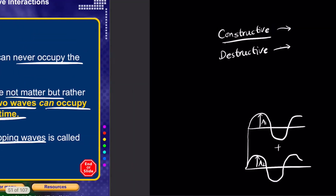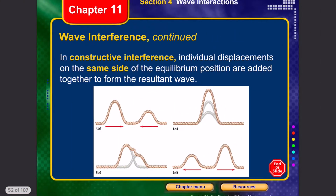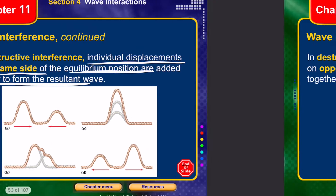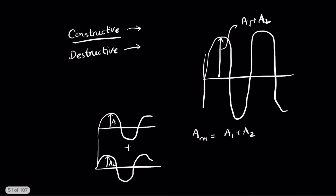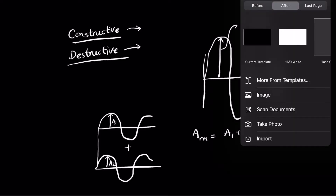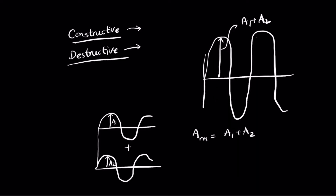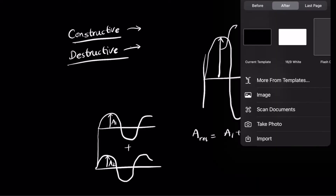In constructive interference, individual displacements on the same side of the equilibrium position add together to form the resultant wave. The second type is destructive interference, which happens when you have two waves on opposite sides of equilibrium.